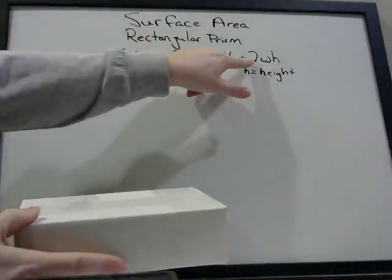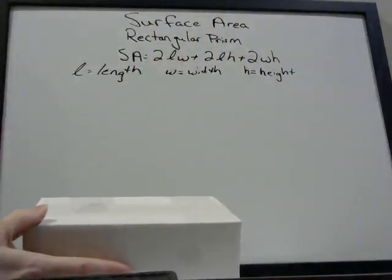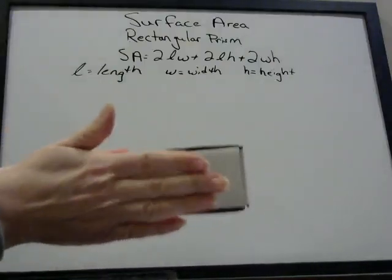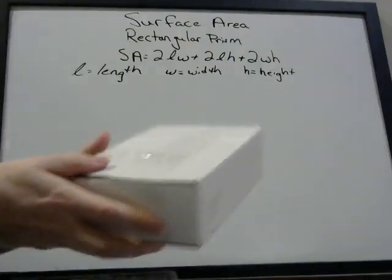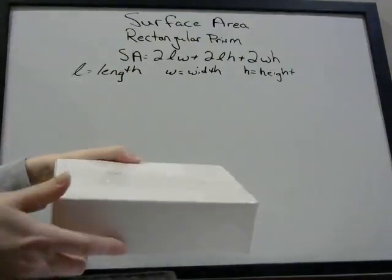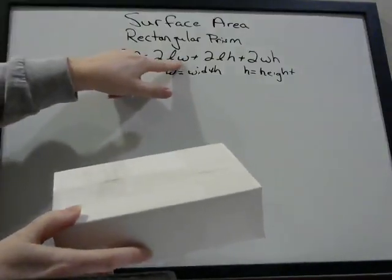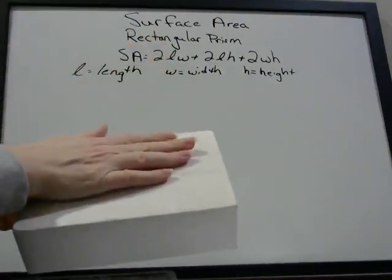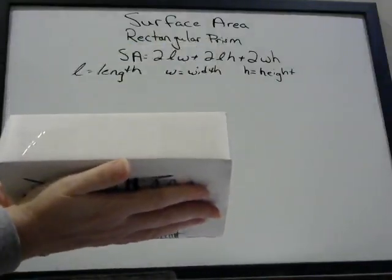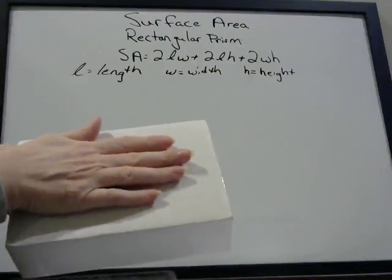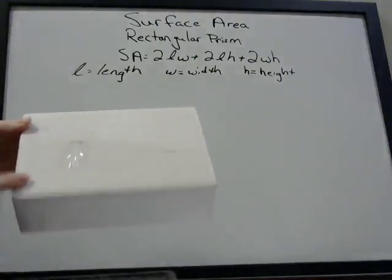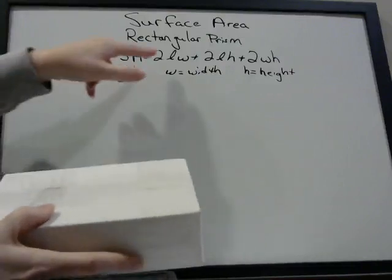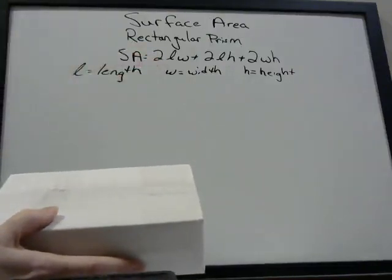So why do we have these twos in front of each of those? The reason is because the front side is the same as the back side, and this side is the same as this side. So we are only finding the area one time and then multiplying it by two. If it makes more sense to you to find the area of the top, find the area of the bottom, and then add them together, you can do that — but recognize they're going to be the same area, because we find it by length times width. Adding them together is the same thing as multiplying one of them by two.